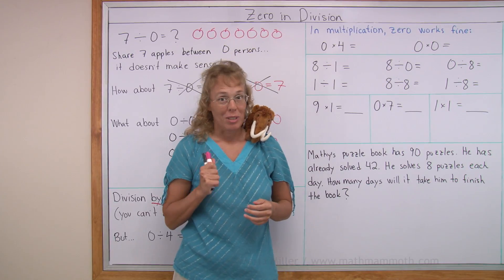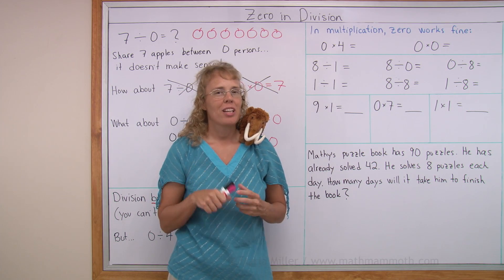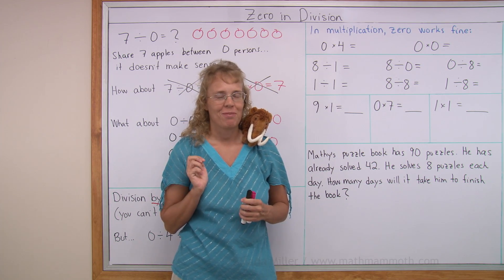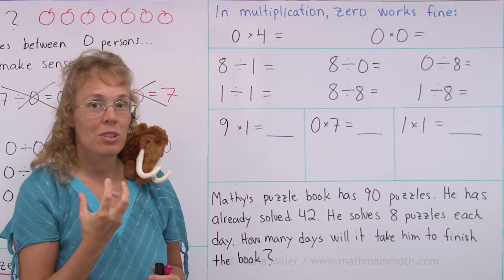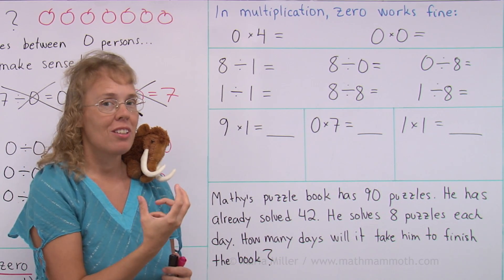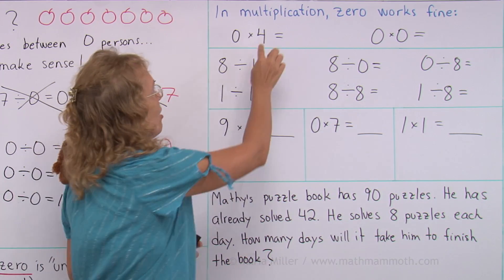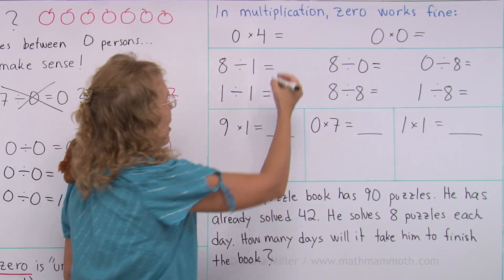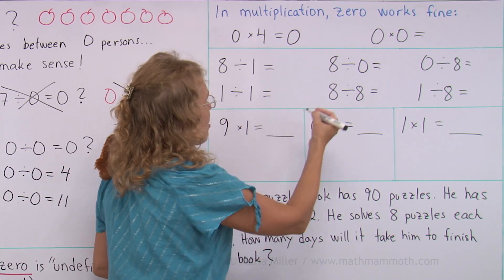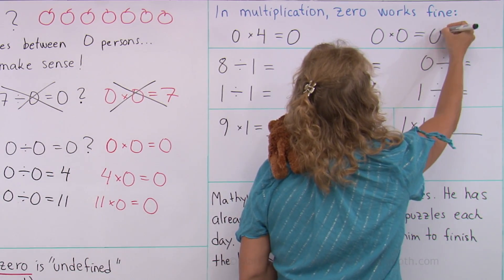In case you wonder about multiplication, in multiplication, zero works just fine. Just to remind you, if we have zero times four, you can think of zero groups, and in each group would be four. Or you can think of four groups where in each group there are zero items. Either way, the answer is zero, and also zero times zero is just plain zero.